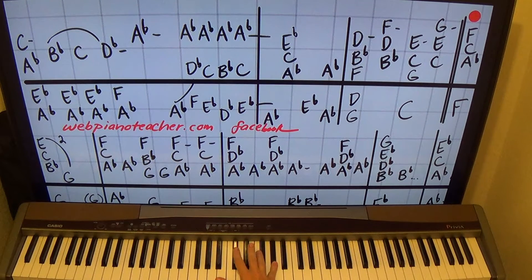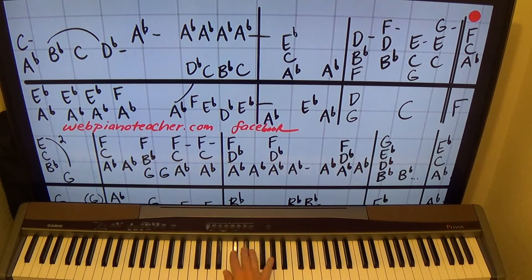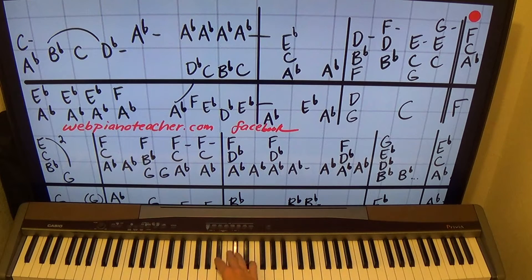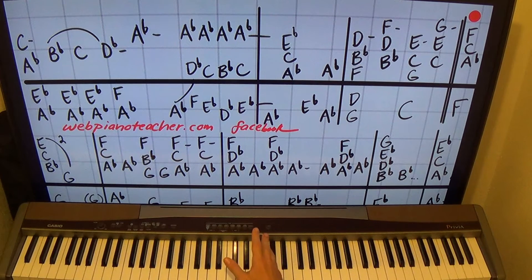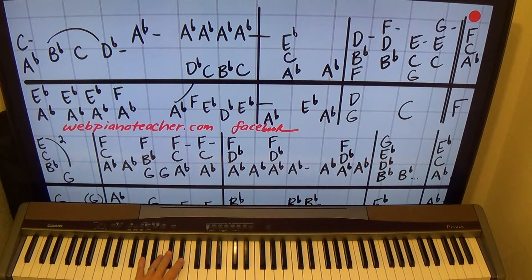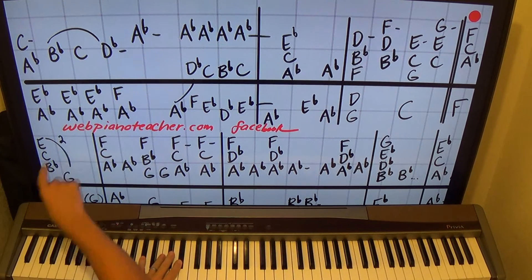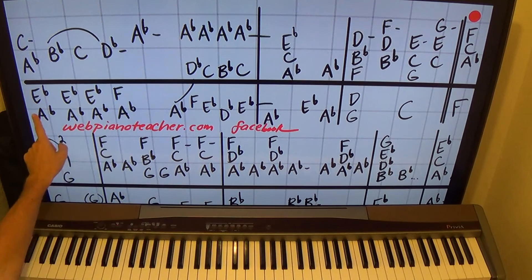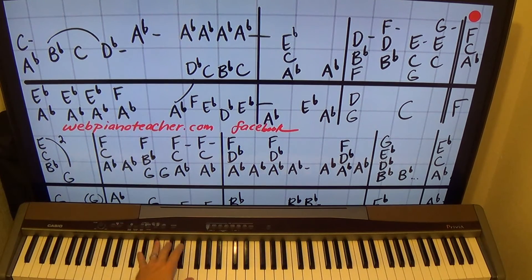All right, left hand is going to start with a fifth: A-flat and E-flat. Boom, boom, boom, boom. So you keep with that fifth until there, you move up to F on the top. One, two, three.